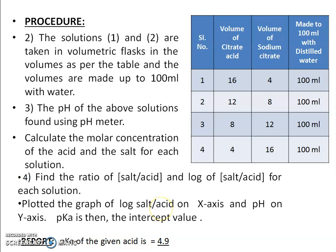When the concentration of salt and acid becomes equal, log(salt/acid) equals log 1, which is 0. At that point, pH equals pKa as per the Henderson-Hasselbalch equation. So the pKa of the given acid is 4.9 when we conducted the experiment.